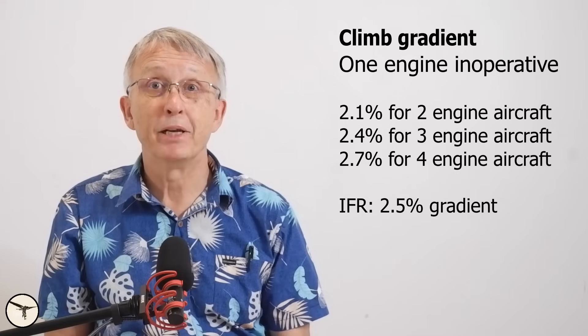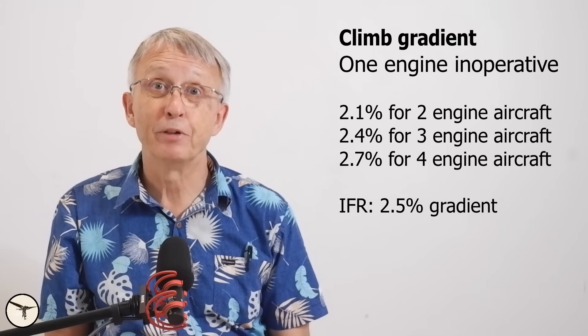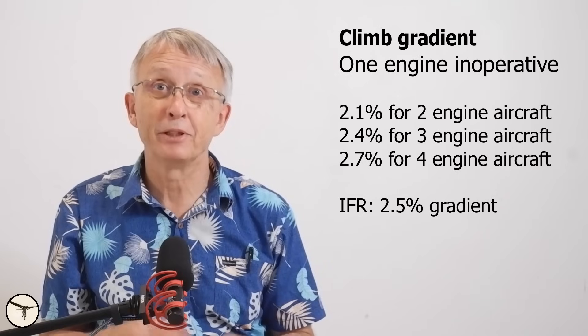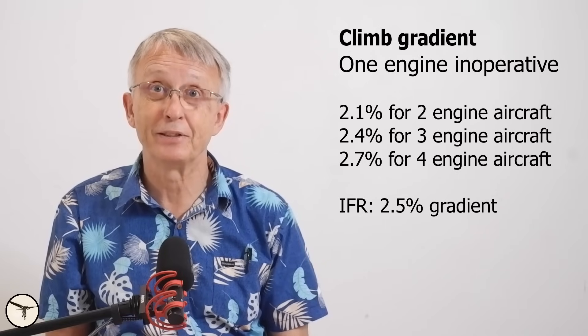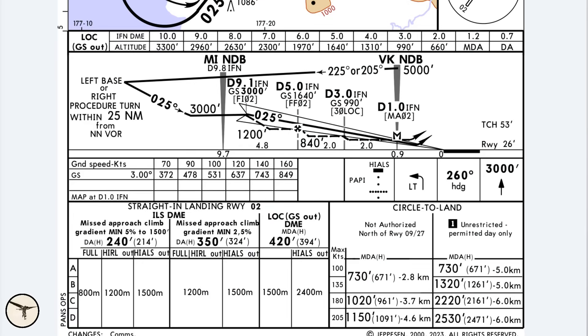At the acceleration altitude, the procedure is the same as after takeoff: the aircraft accelerates, flaps are retracted, and the climb continues at the appropriate speed. The minimum required climb gradient with one engine out is 2.1%, and when we fly IFR, the minimum climb gradient during a missed approach is 2.5%, regardless of the number of engines. If a higher gradient is required, it is printed on the approach chart. For example, this approach chart has a published minima of 5% and 2.5% climb gradient.